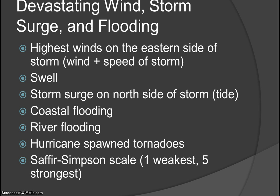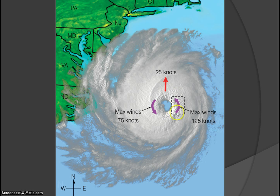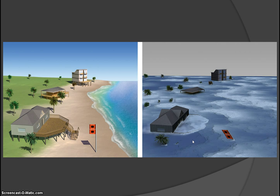Devastating wind, storm surge, and flooding are the main hazards, along with high tides. In the northern hemisphere, the strongest winds are on the eastern side of the storm because the storm is moving northward — you add the storm's forward speed to the wind speed. At the coast, storm surge can be as high as 20 to 25 feet with the most extreme storms when combined with certain coastal conditions, as we saw with Sandy.